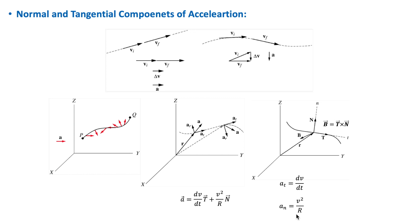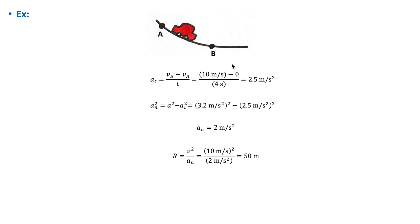Here r is the radius of curvature at a certain point on the path. Let's consider this example: suppose that a car is moving with a constant tangential acceleration down a ramp, and if it starts from rest at a and reaches b after 4 seconds with a speed of 10 meters per second, we want to find the radius of curvature at b if the total acceleration there is 3.2 meters per second squared. The tangential acceleration is 10 over 4 seconds, which equals 2.5 meters per second squared. Knowing the total acceleration at b is 3.2, the normal acceleration at b is 2 meters per second squared, and the radius of curvature at b is 50 meters.